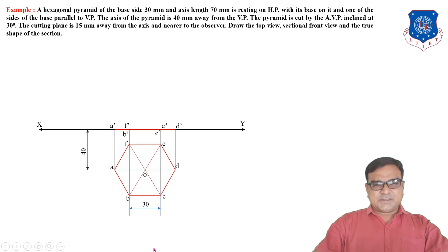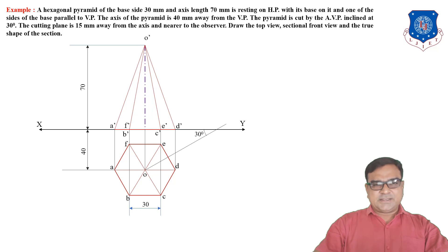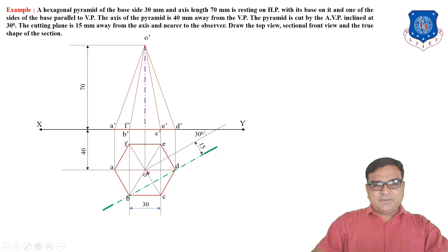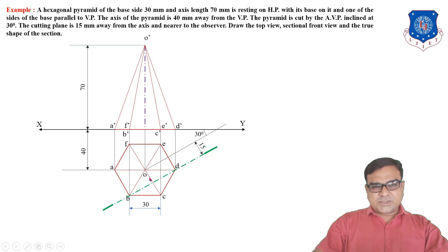Draw the front view of base A′B′C′D′E′F′. The apex O′ is at 70 mm height, and draw the slant edges. The pyramid is cut by AVP inclined at 30 degrees to VP, with the cutting plane 15 mm away from the axis and nearer to the observer. Draw a line from O inclined at 30 degrees with XY, and draw a parallel line 15 mm away perpendicular from the axis. The cutting plane passes through edges at B, D, and OC, giving three cutting points 1, 2, and 3.